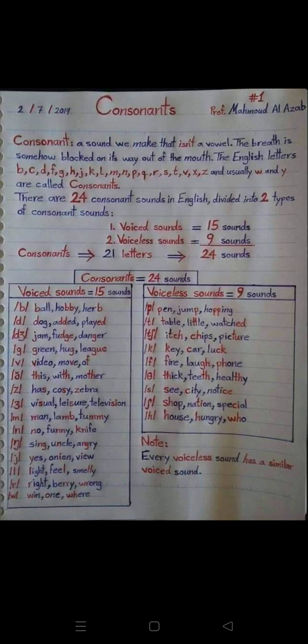Voiced sounds (15): B — ball, hobby, herb. D — dog, added, played. J — jump, fudge, danger.